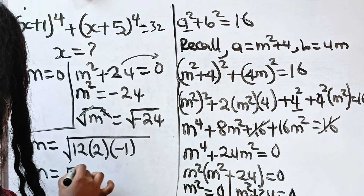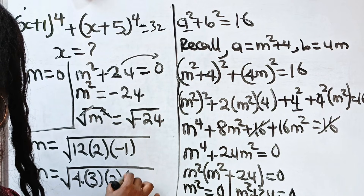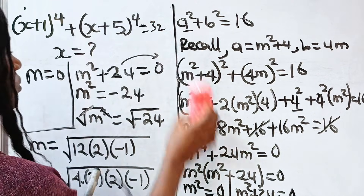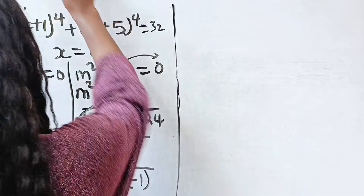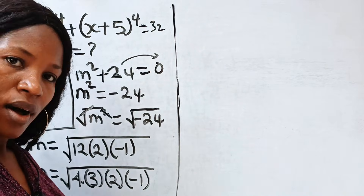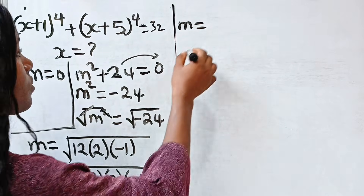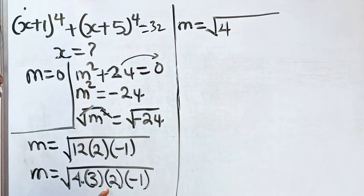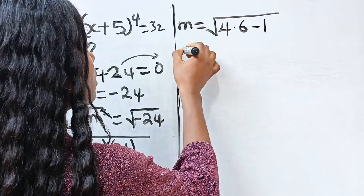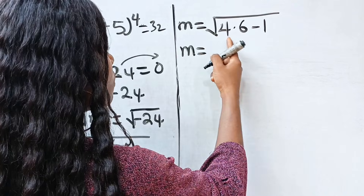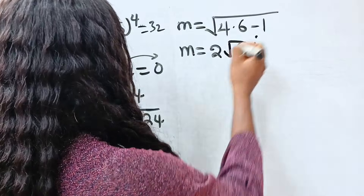The square root of negative 24 can be written as the square root of 4 times 6 times negative 1, which simplifies to 2 root 6 times i, since the square root of negative 1 is i. So m equals plus or minus 2 root 6 times i.